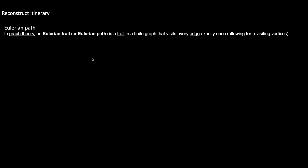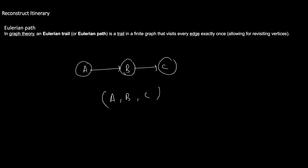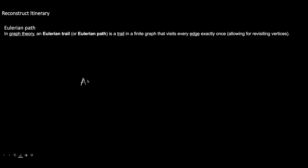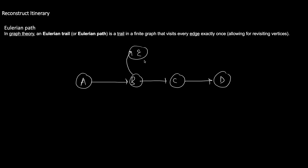Let us take some examples. Consider a simple graph with nodes A, B, and C. The Eulerian path is A → B → C — following this path covers all the edges. Now consider a larger graph with nodes A, B, C, D, and E. The Eulerian path here is A, B, E, B, C, D. Following this: A to B, then B to E covering that edge, then E to B, then to C, then to D — all edges are covered.